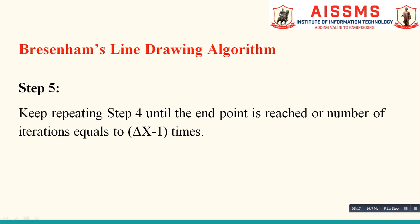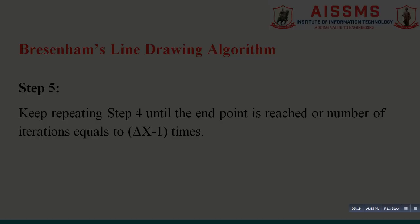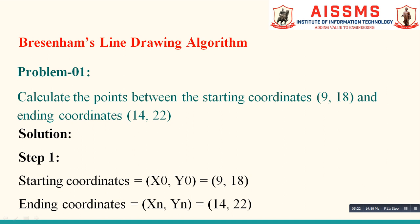Now let us see one problem based on Bresenham's line drawing algorithm. Our problem statement is: calculate the points between starting coordinates (9, 18) and ending coordinates (14, 22). The coordinates of the starting point and ending point are given to us, and we note those coordinates in our standard format where x0, y0 indicates the starting point and xn, yn indicates the ending point.